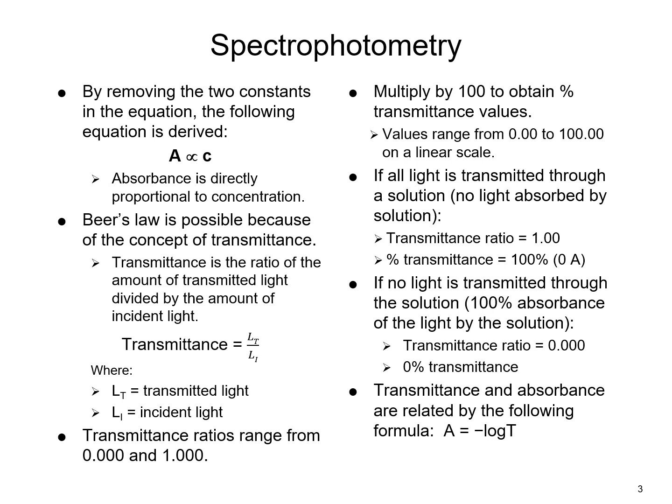Beer's Law is actually possible because of the concept of transmittance. When a cuvette containing a solution that we're analyzing is placed inside of a spectrophotometer, the light can be shown through it. The solution will absorb some of that light — this is the absorbance — but the remainder of the light will actually be transmitted through that cuvette and onto a photodetector. That light on the photodetector is known as the incident light.